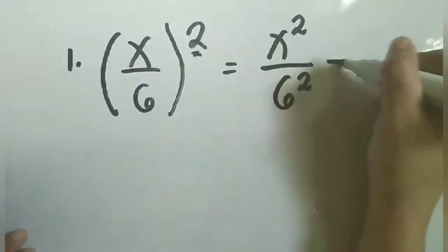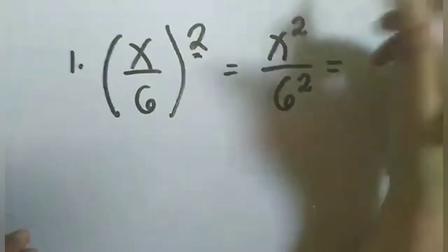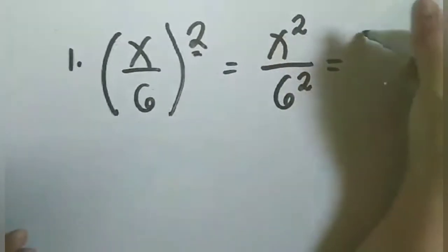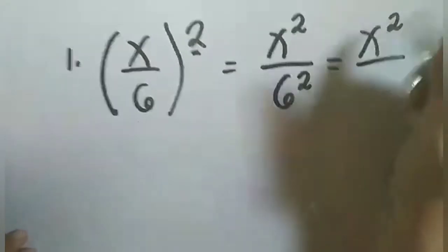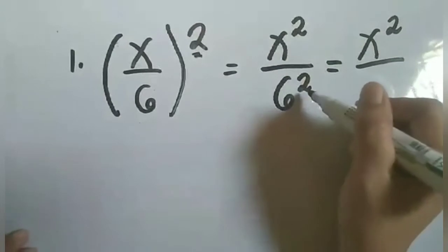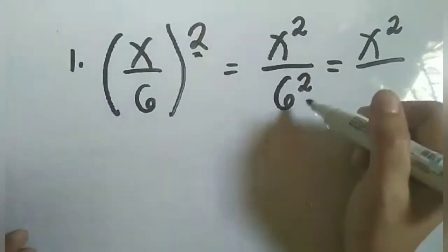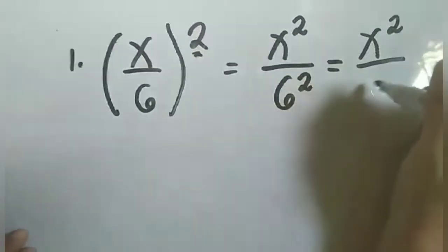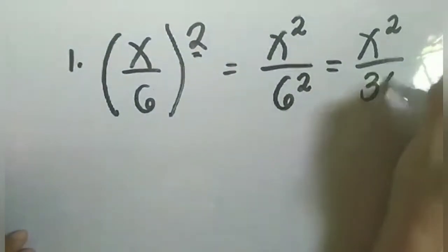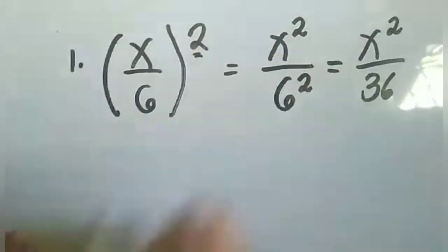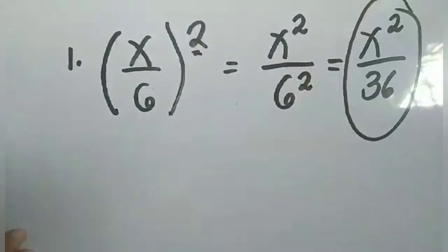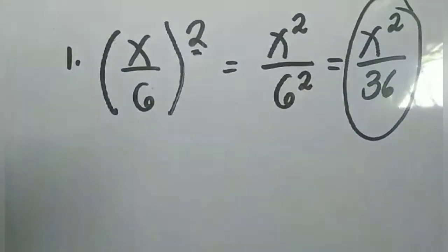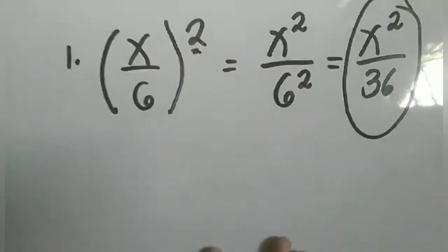So magiging x raised to 2 over 6 raised to 2. Simplify na natin: x squared hindi natin masisimplify, then 6 raised to 2 ay katumbas ng 36, kasi 6 times 6 ay 36. So ang sagot po natin ay x squared over 36.